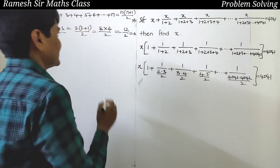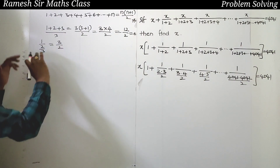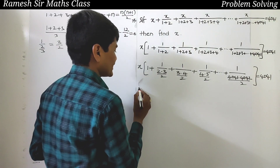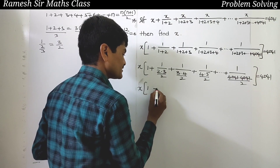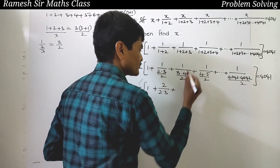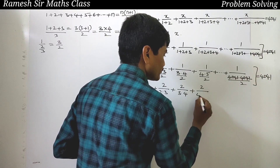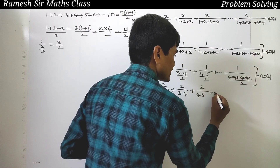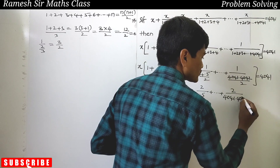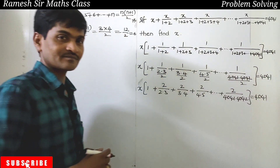If the denominator is a fraction, we invert it. So x times 2/(1×2) plus 2/(2×3) plus 2/(3×4) plus 2/(4×5) plus and so on plus 2/(4041×4042) equals 4041.